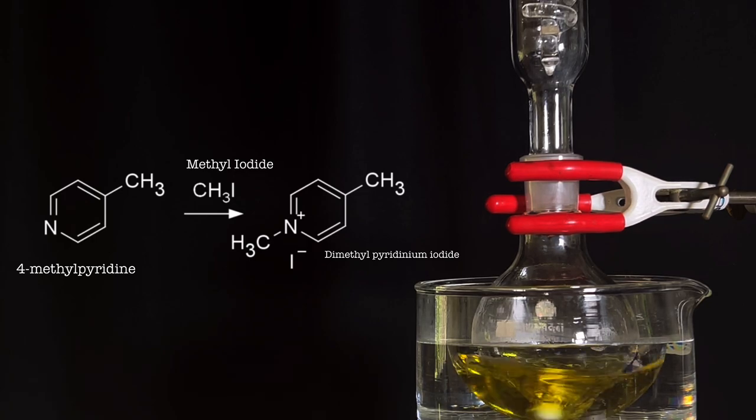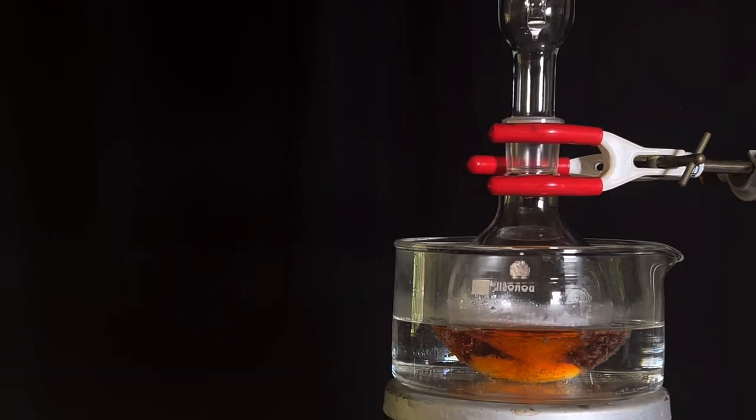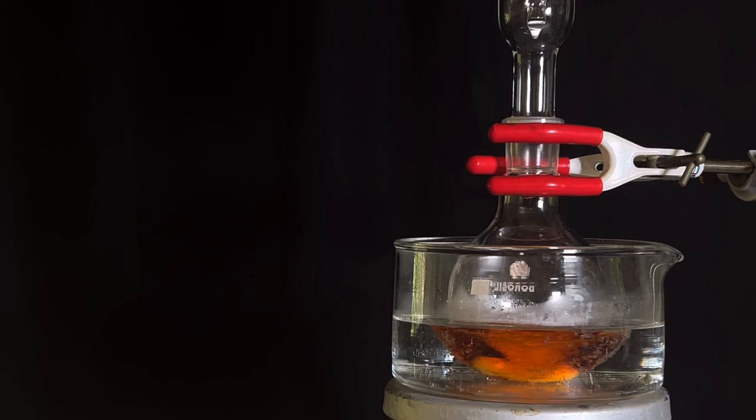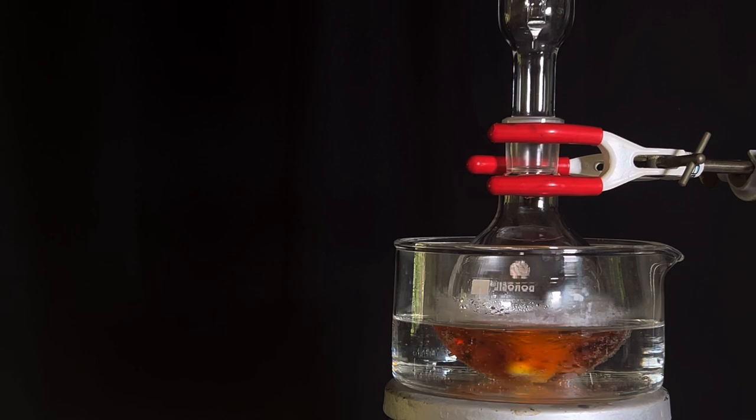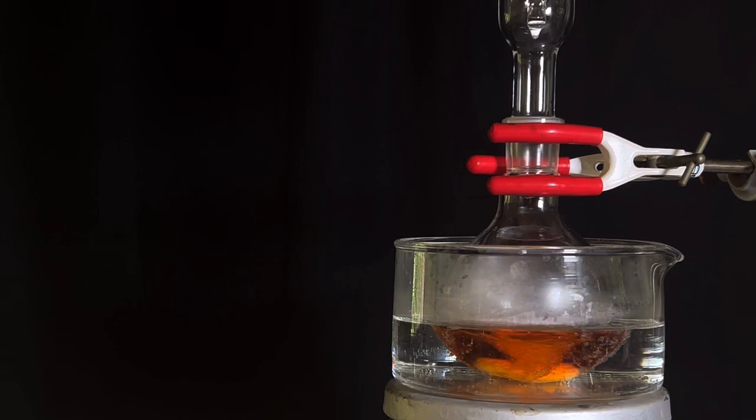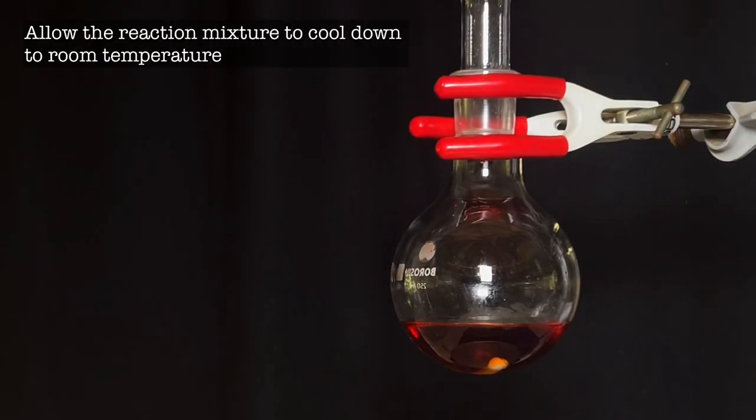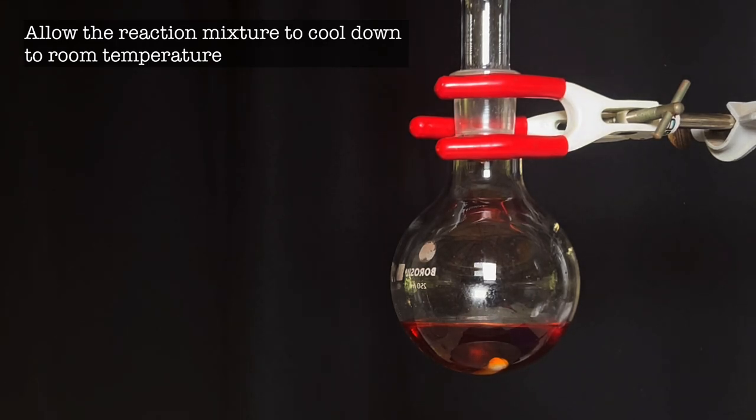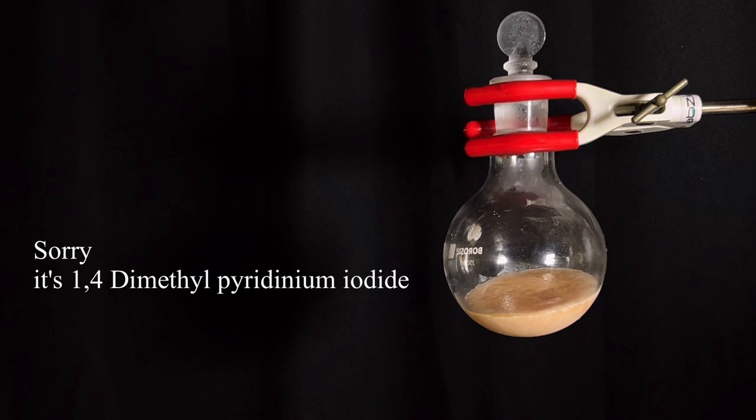Continue reflux for 2 hours and by the end of 2 hours we notice a color change in the reaction mixture from yellow to orange. After 2 hours the reflux is stopped and the system is dismantled. The round bottom flask is allowed to cool down to room temperature. On cooling down the whole of the content solidifies and the microcrystalline product that we get is the 1,3-dimethylpyridinium iodide.